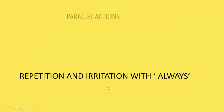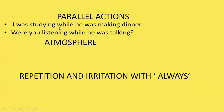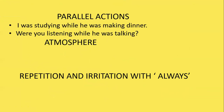You can also use past continuous to talk about parallel actions. Example: 'I was studying while he was making dinner.' 'Were you listening while he was talking?' When you use the past continuous with two actions in the same sentence, it expresses that both actions were happening at the same time. Here, the actions are studying and preparing dinner — happening simultaneously.